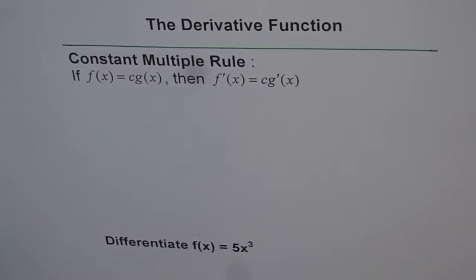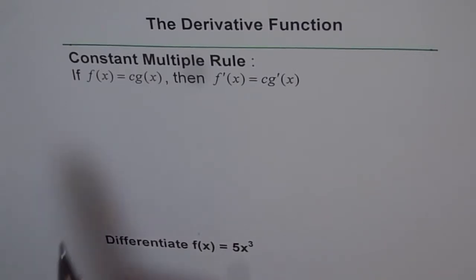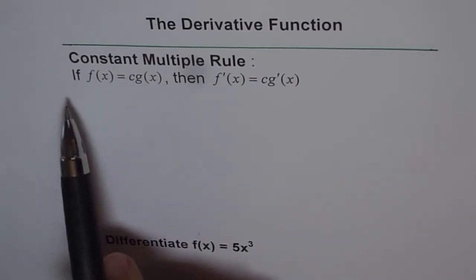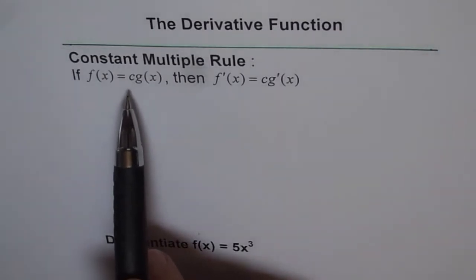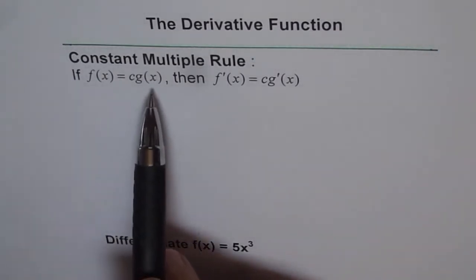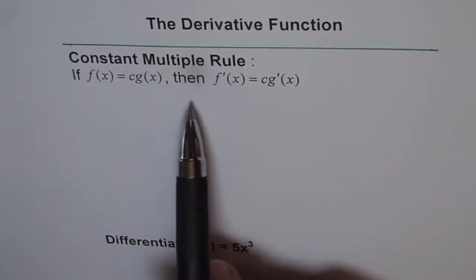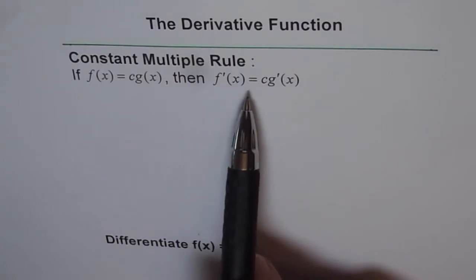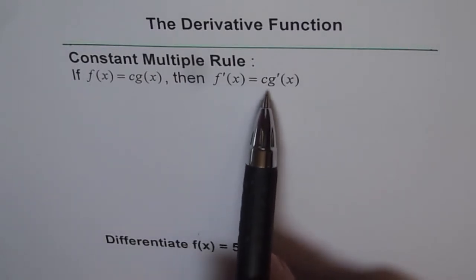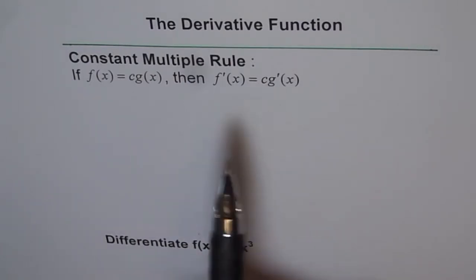The derivative function. Let's try to understand the constant multiple rule. It says that if f of x equals c times g of x, then f prime of x is equal to c times g prime of x.